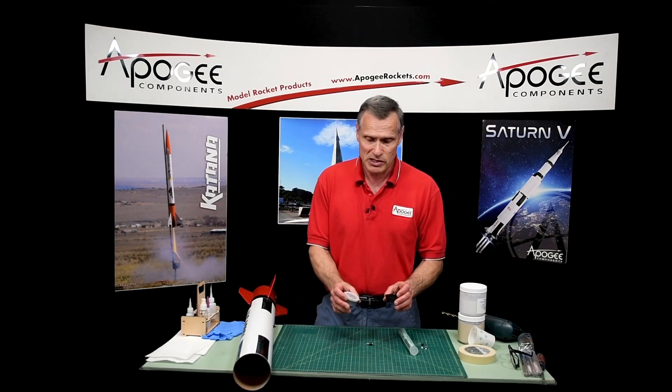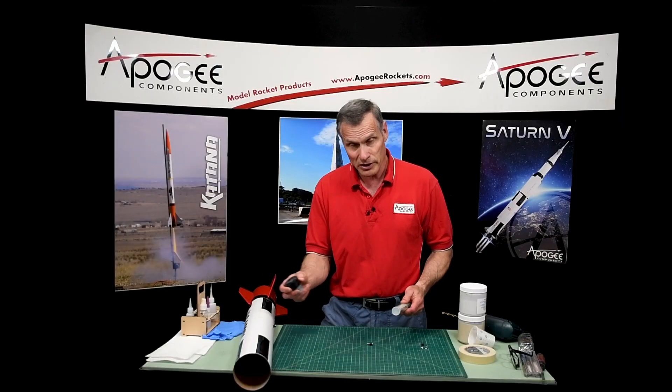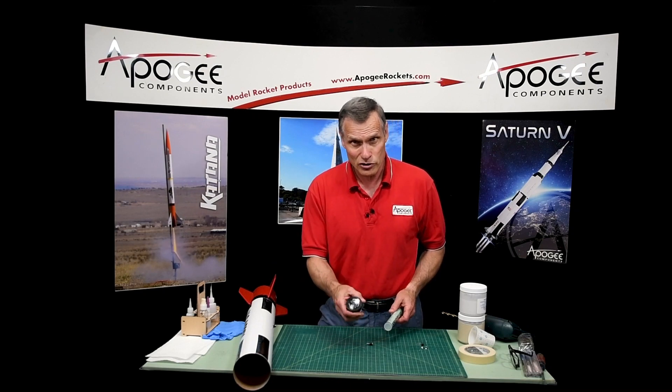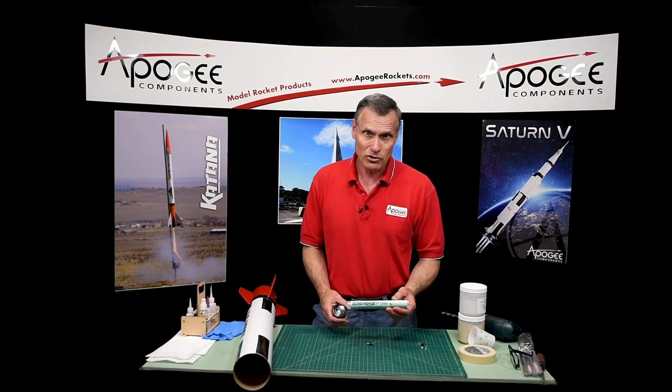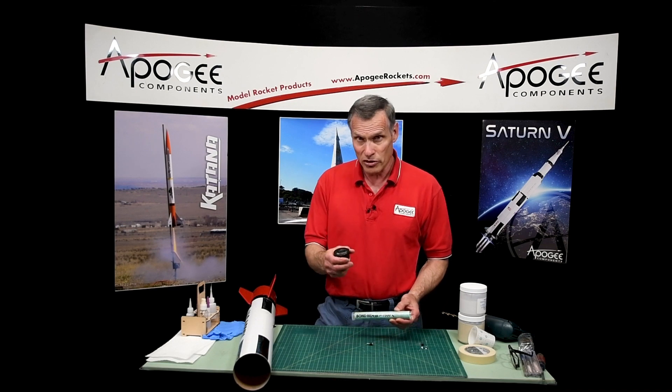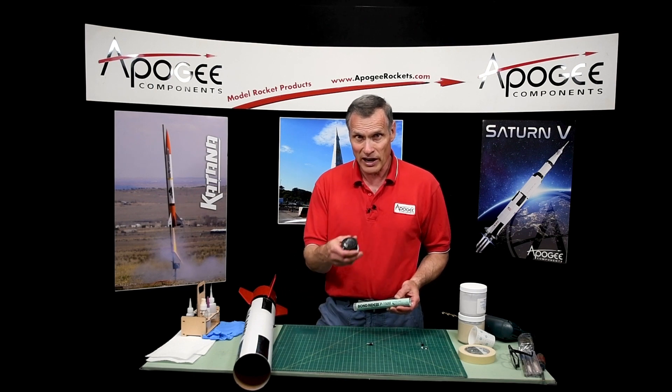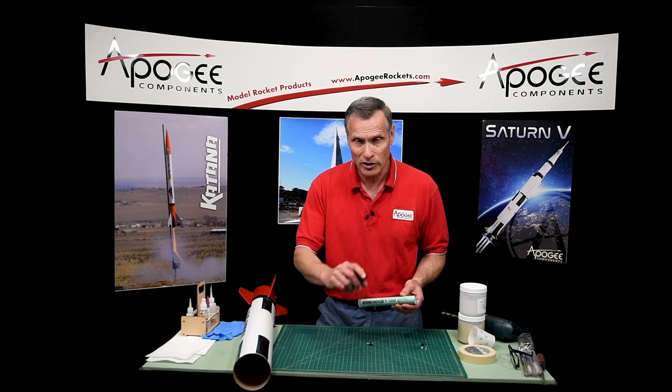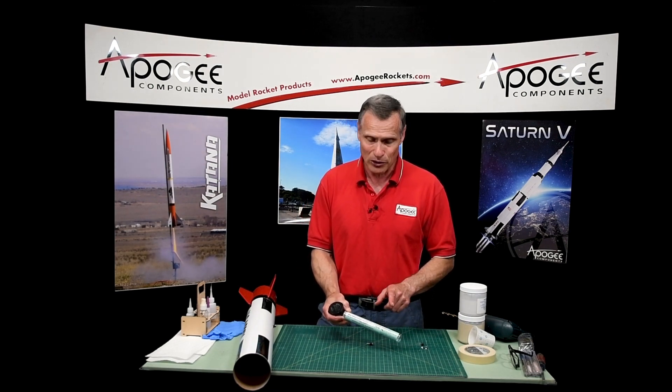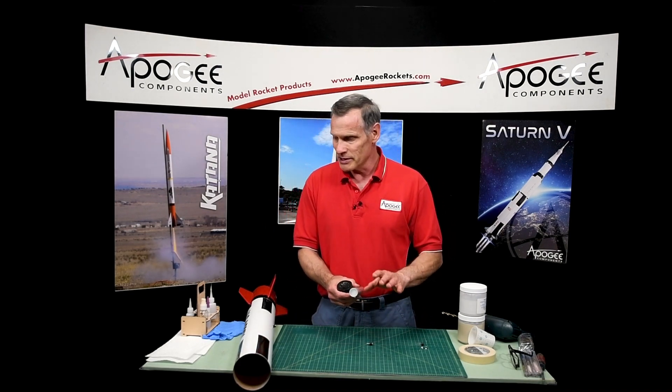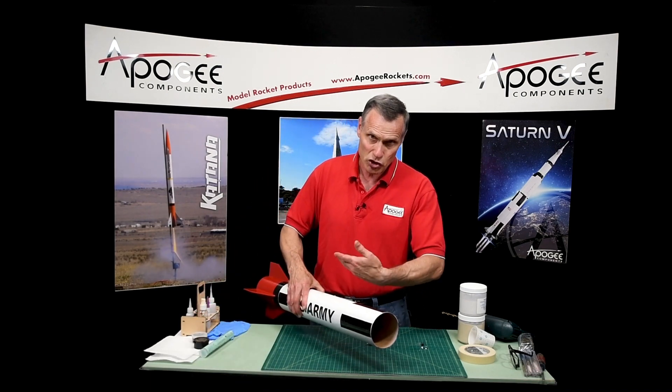Now there's two kinds of epoxy clay that we sell here at Apogee Components. We sell the Fix-It brand and the Bond-Aid. Now the Fix-It brand, the difference is this takes a full 24 hours to cure, where this is cure in less than 20 minutes, and it's hard in five. So this doesn't give you a lot of working time. This gives you plenty of working time. So my rule of thumb is if it's on the outside of the rocket, I'm using this because then I can smooth it out and feather the edges really nice, but if it's on the inside of the rocket where nobody's going to see it, and I don't care how it looks, I'm going to use the Bond-Aid. And this is easy to mix. You just take an equal glob of each part, mix it together, and just smoosh it on the inside.